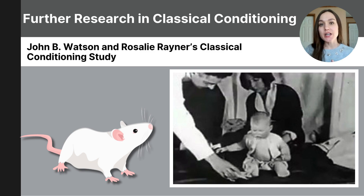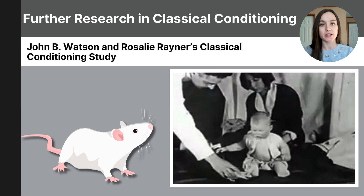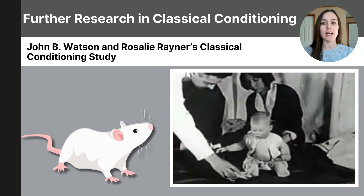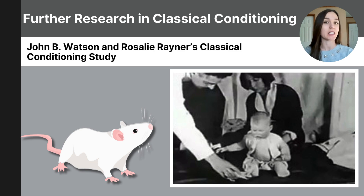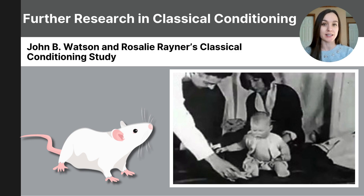Building on Ivan Pavlov's work, behavioral psychologist John B. Watson and his research assistant Rosalie Rayner studied classical conditioning using a nine-month-old human subject called Little Albert. This 1920s study was groundbreaking in behavioral psychology because it demonstrated how emotional responses could be classically conditioned in humans.